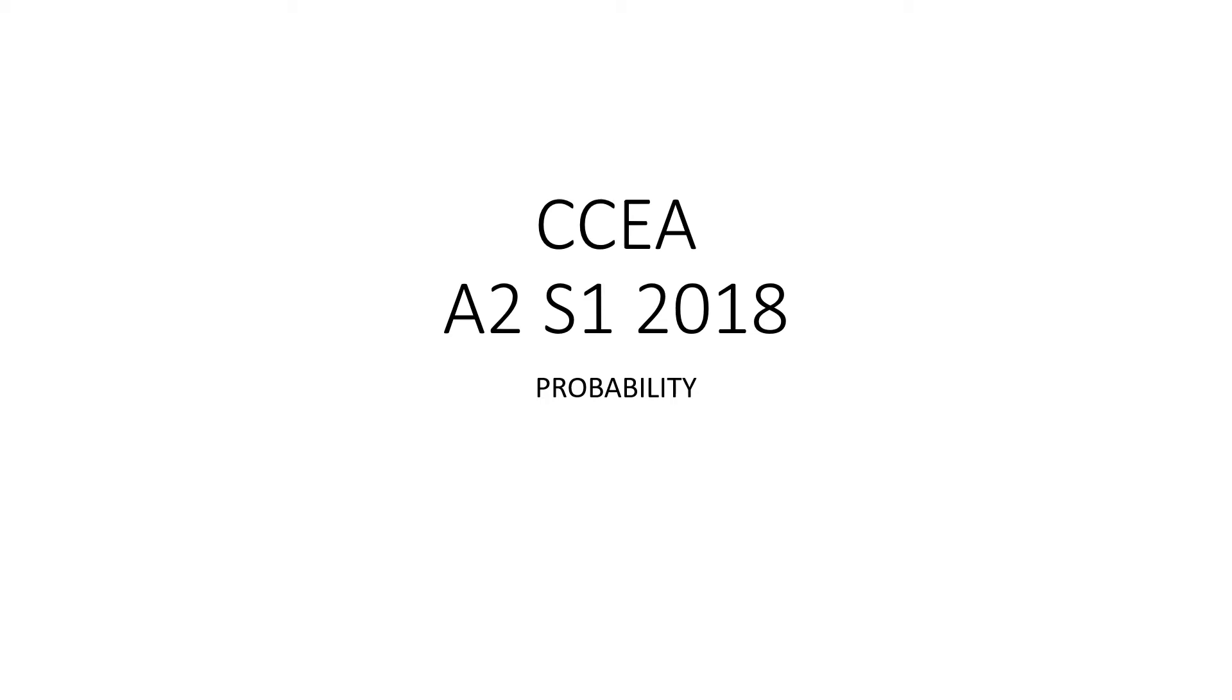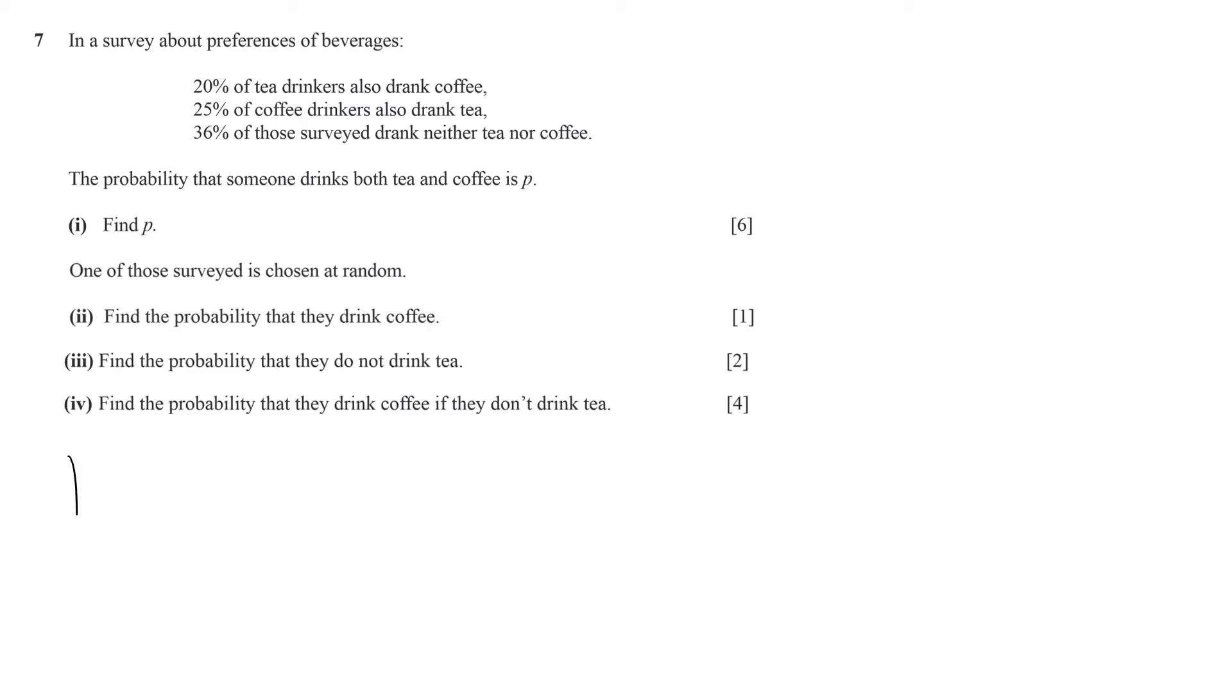This is an S1 probability question, so we start with a Venn diagram. We have tea and coffee, and the only thing I can put in is that 36 percent drank neither.